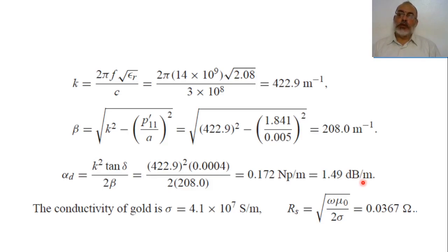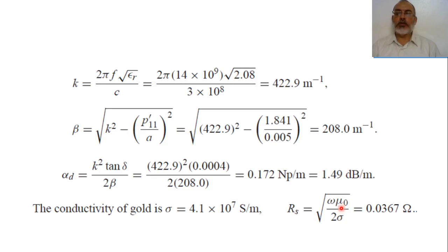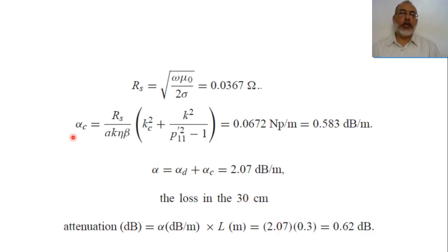For the conductor loss, we first calculate the surface resistance R_s, which equals the square root of omega mu_0 over 2 sigma. The waveguide is gold-plated; the conductivity of gold is 4.1×10^7 S/m. mu_0 is 4π×10^-7 and omega is 2π times 14 GHz. From R_s, we calculate the attenuation coefficient due to conductor loss in the TE11 mode using the formula: alpha_c = R_s over (A K eta beta) times (Kc squared + K squared over B'_11 squared minus 1).